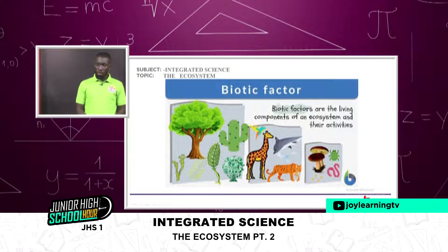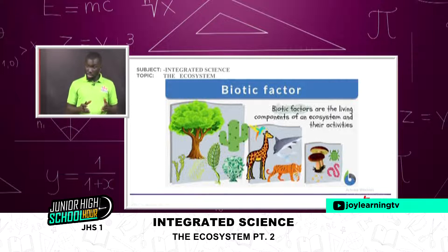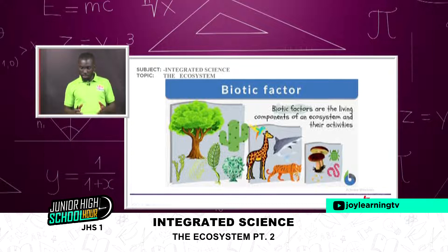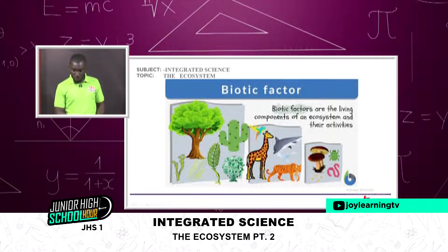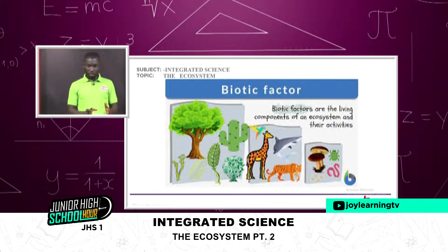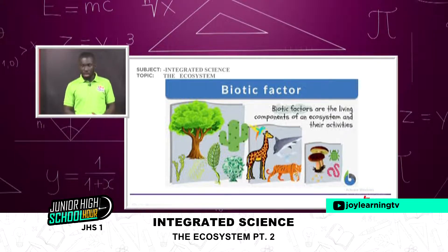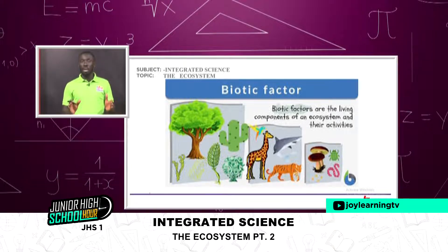Biotic factors are the living components of an ecosystem and their activities. So we have a tree as a plant, a giraffe, a tiger, mushrooms, a bird, a dolphin, a termite, and a snake, along with other different plants. All these constitute the biotic factors of an ecosystem because they are all living organisms or living things.